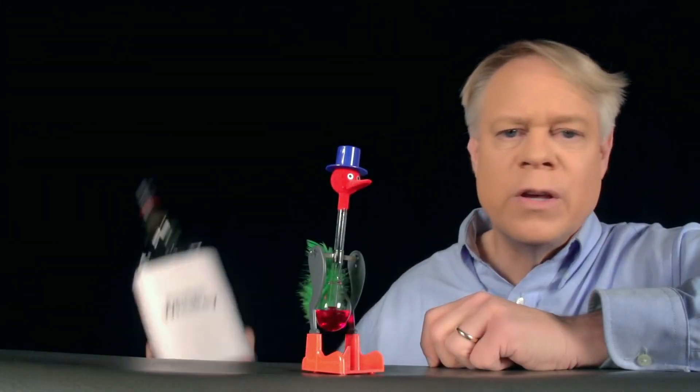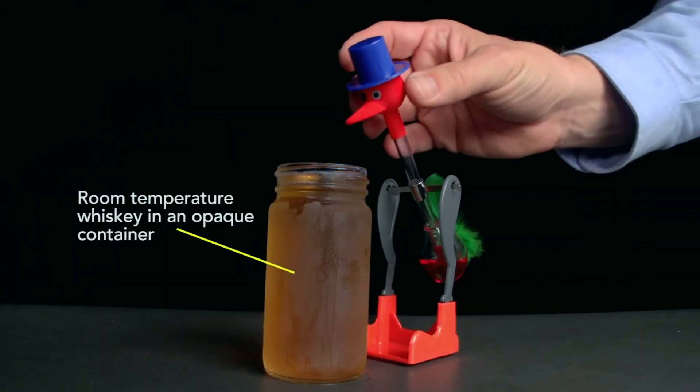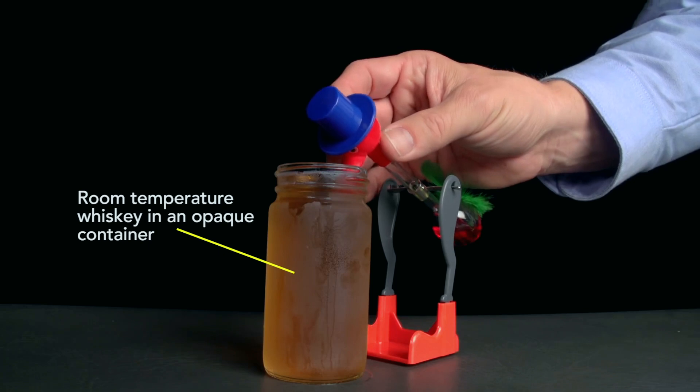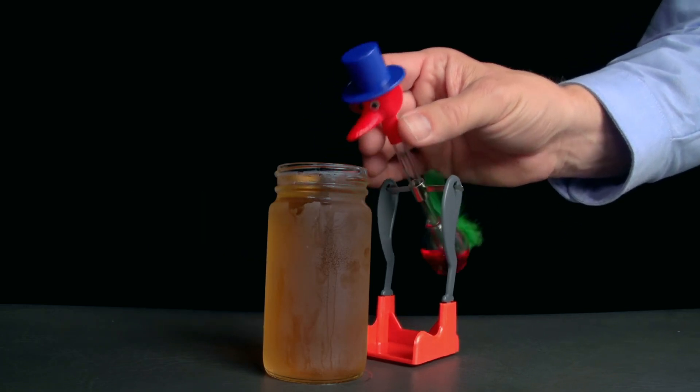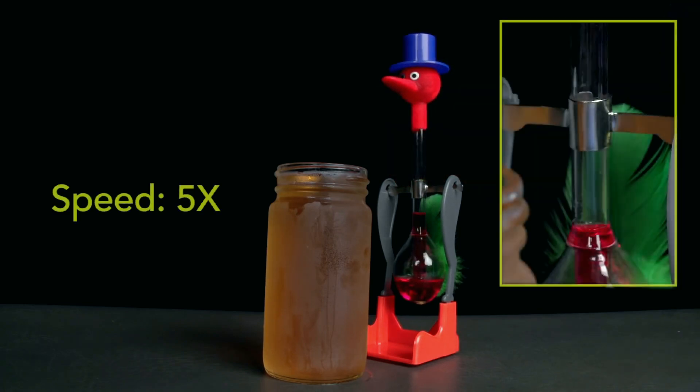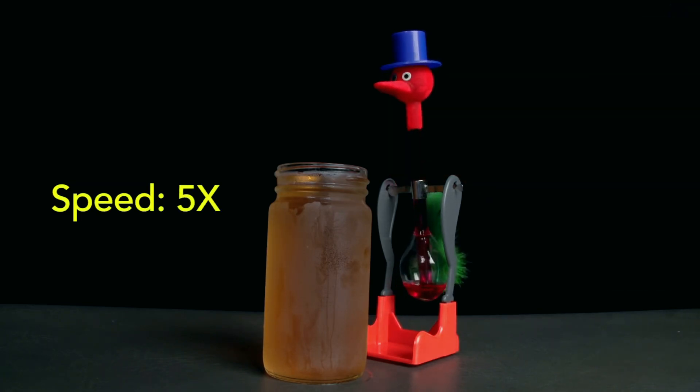Next, let's see what happens if we use this whiskey. Again, thoroughly wet the bird's beak with the liquid, stand it upright, and then we see again the liquid rising in the bird. And then it drinks.